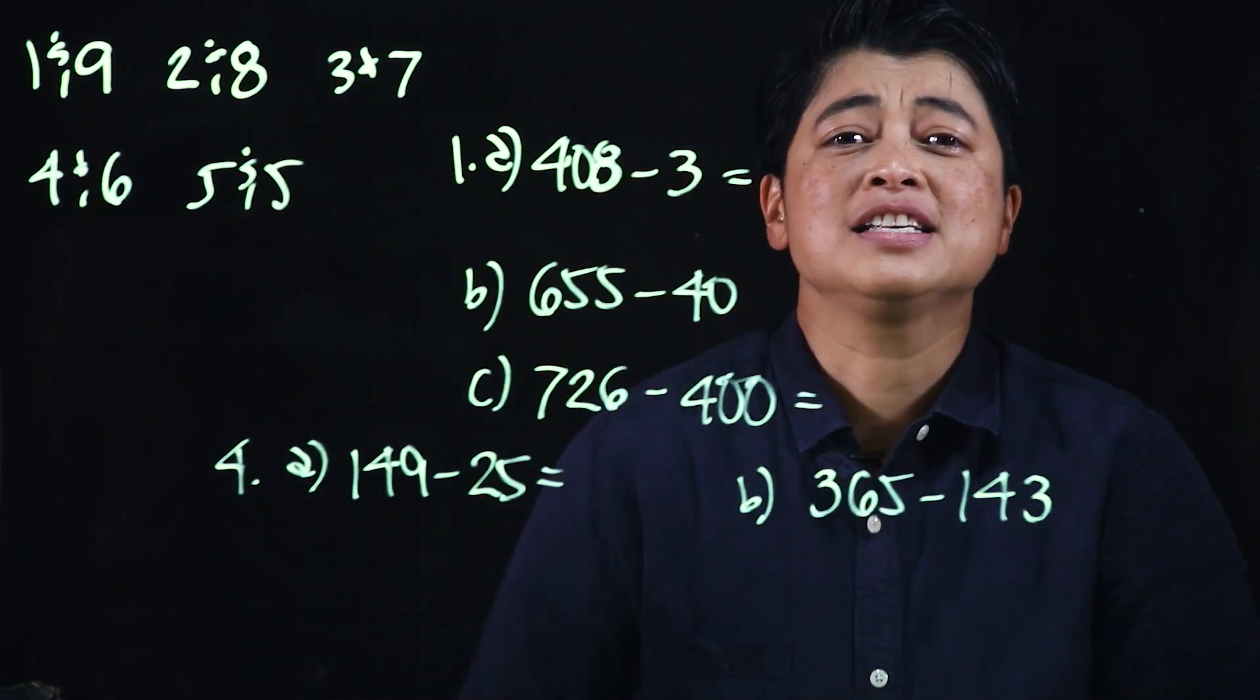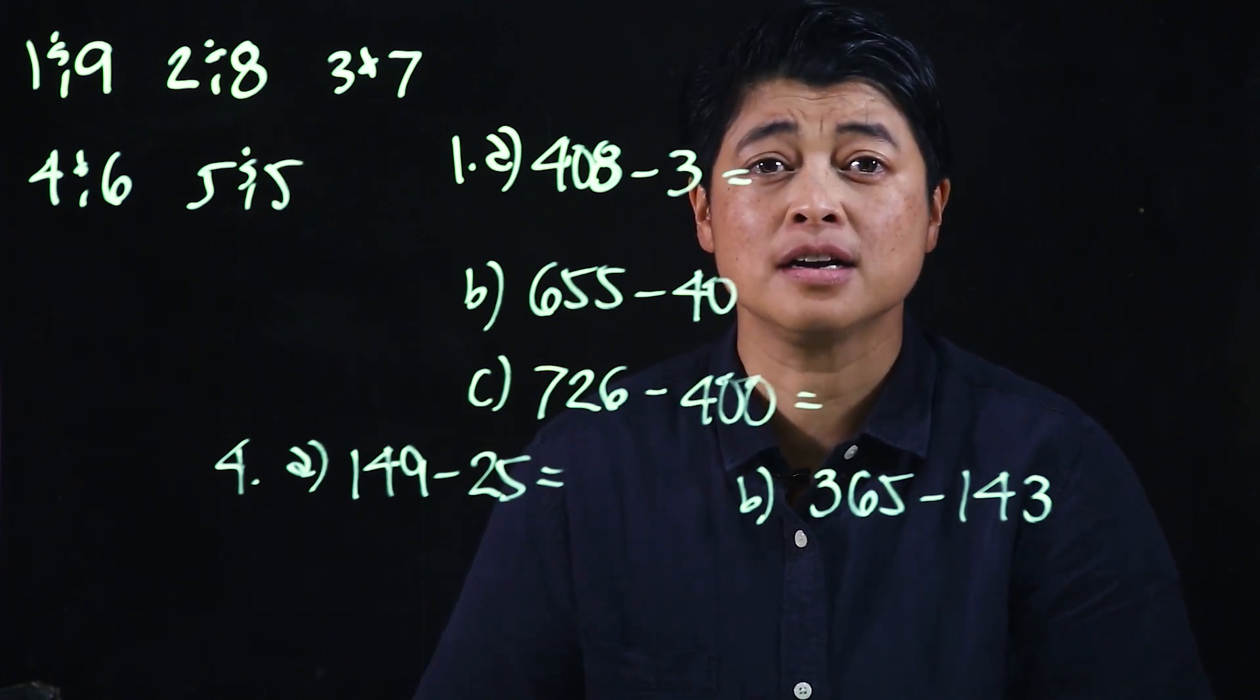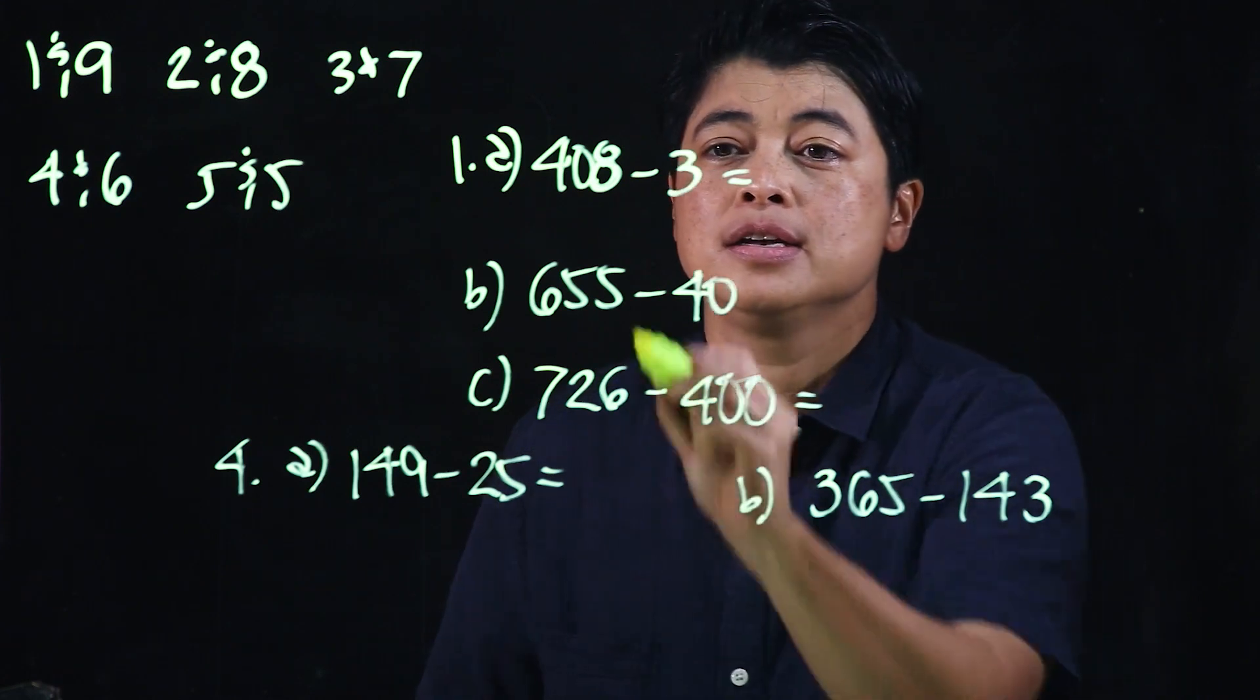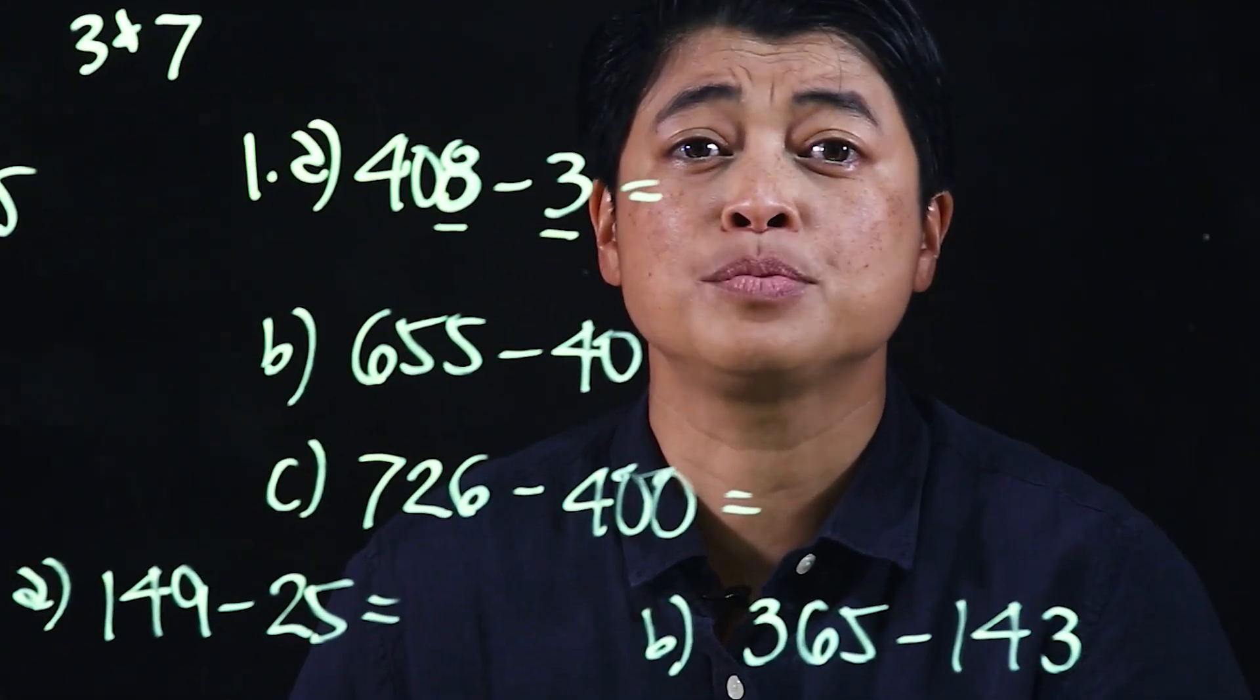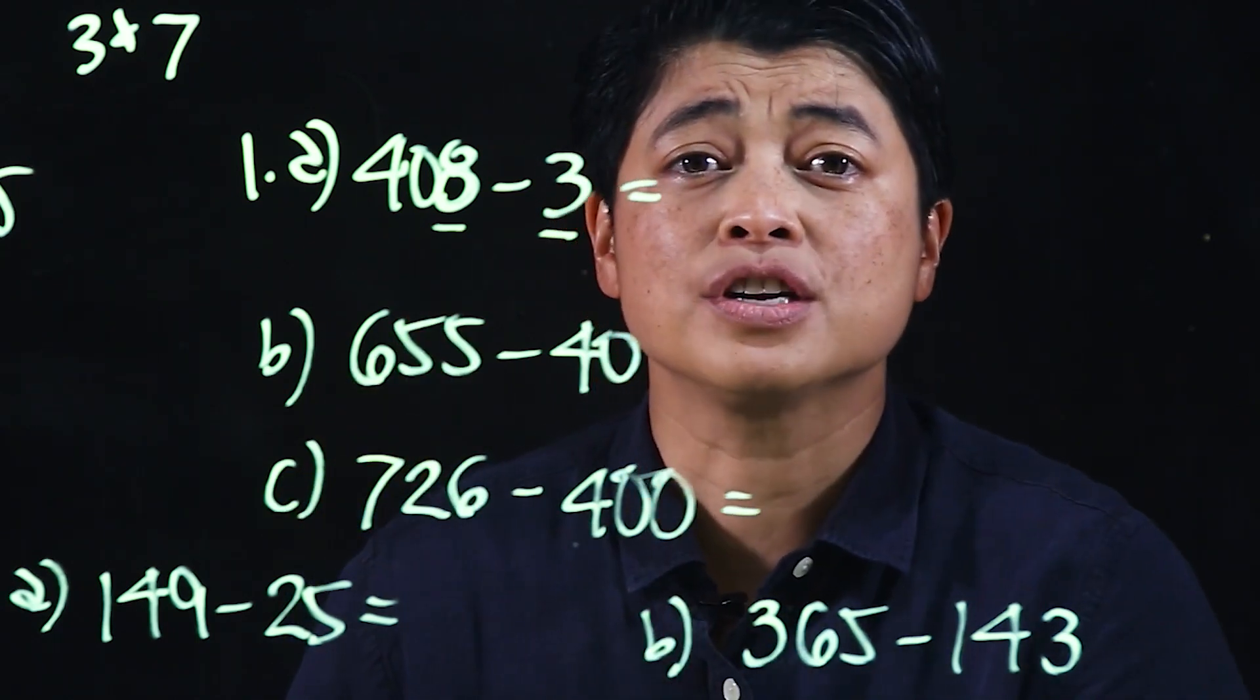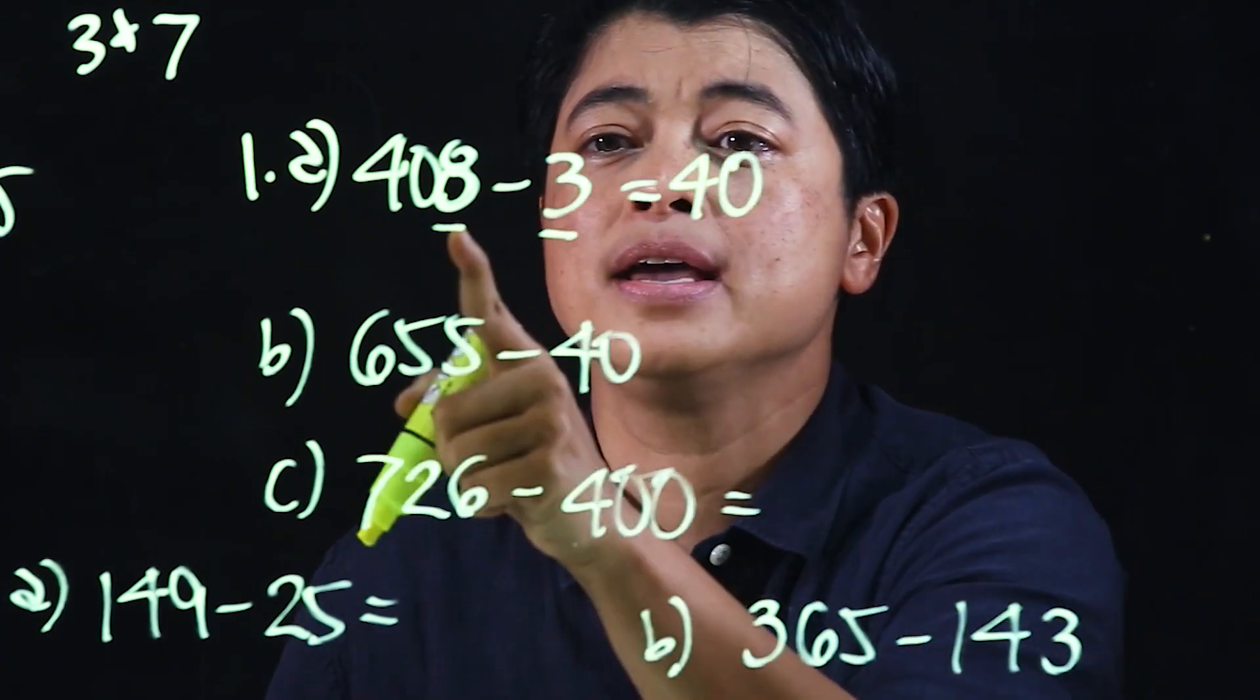This is mental subtraction. So when it's mental subtraction, it's just a single place value subtraction. So therefore in this case it's the ones that's being subtracted, therefore the other values are just copied. So this is 408 minus 3 is 405.